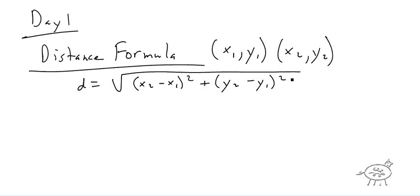It actually comes from the Pythagorean theorem. The distance d is c — it's the hypotenuse. The distance between these points is basically the legs squared added together, and then the square root. That's where it comes from.